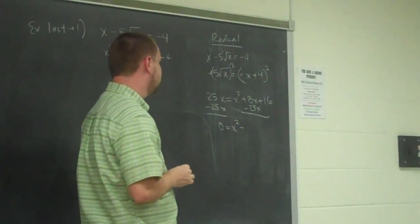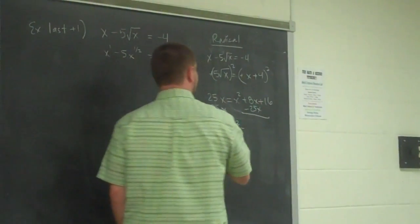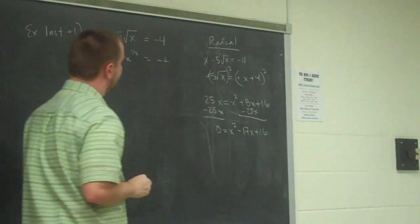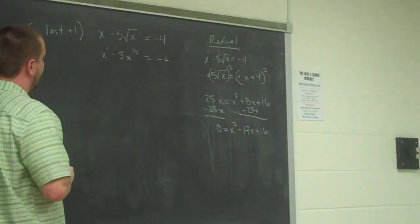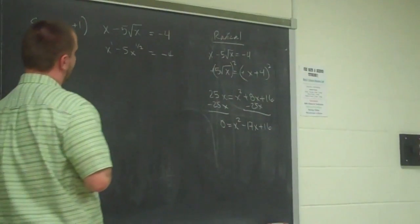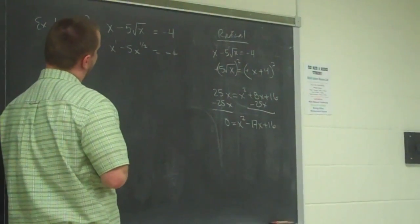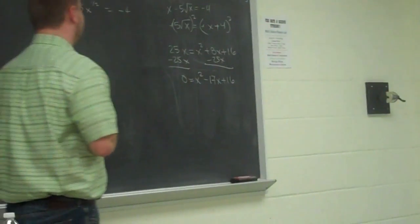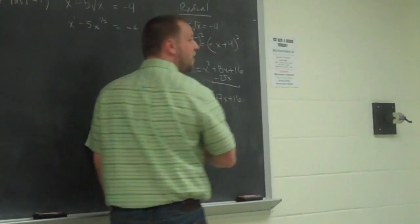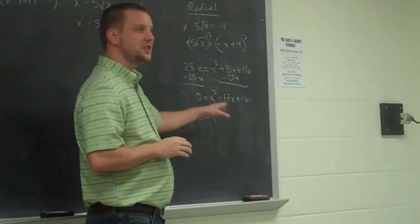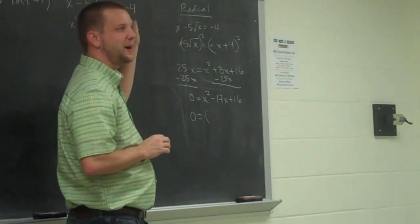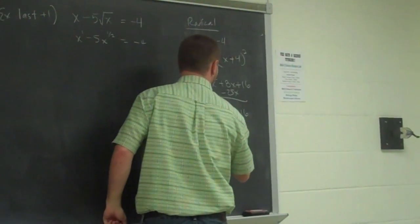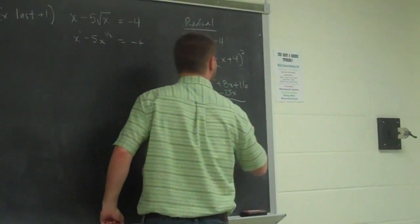x squared is 16. This is working out. I wasn't expecting this. I was expecting different solutions. I did it wrong in my head apparently, but I'm still going to get nice answers. How lucky is that? Okay, so this is x minus 16 times x minus 1.